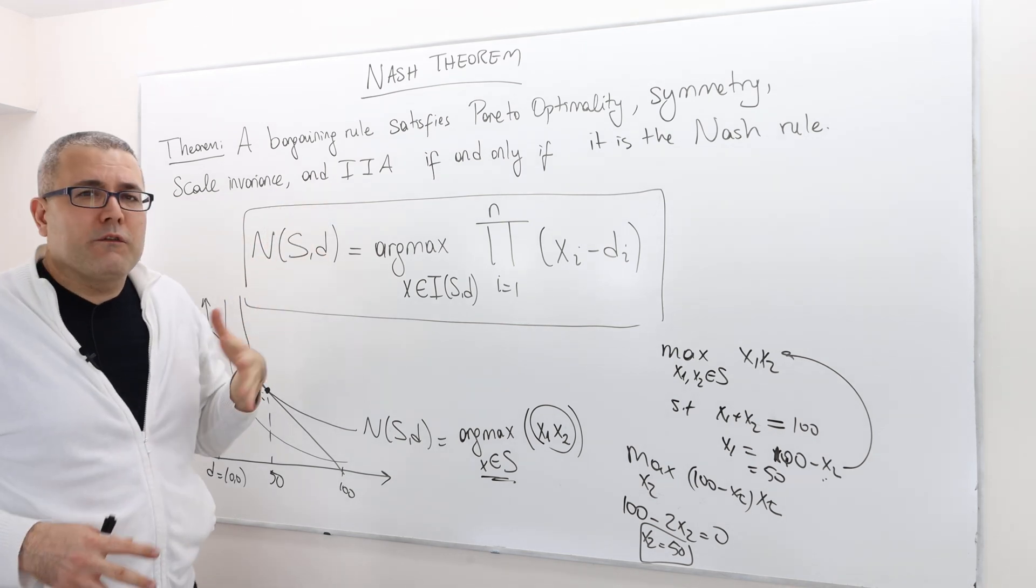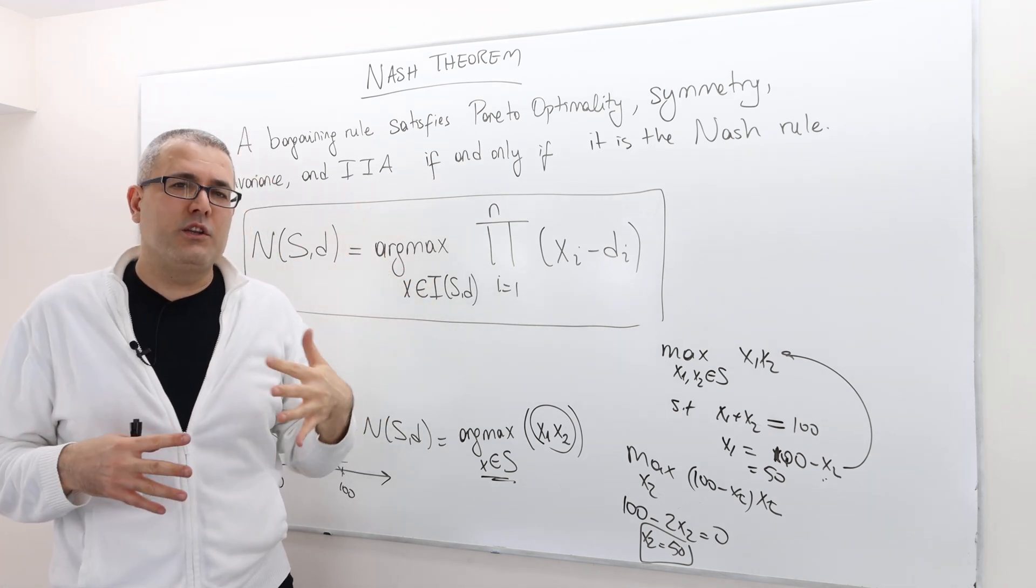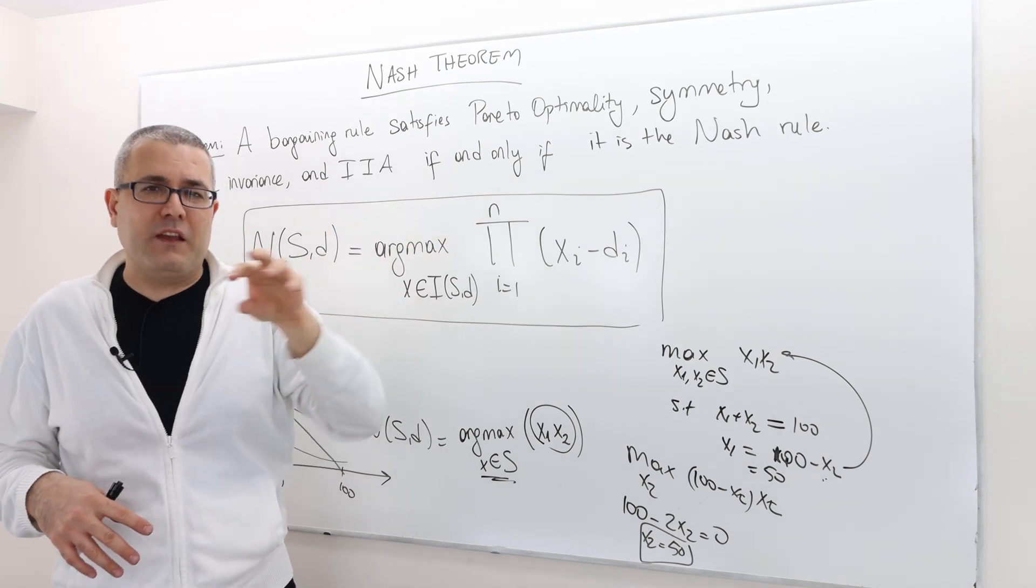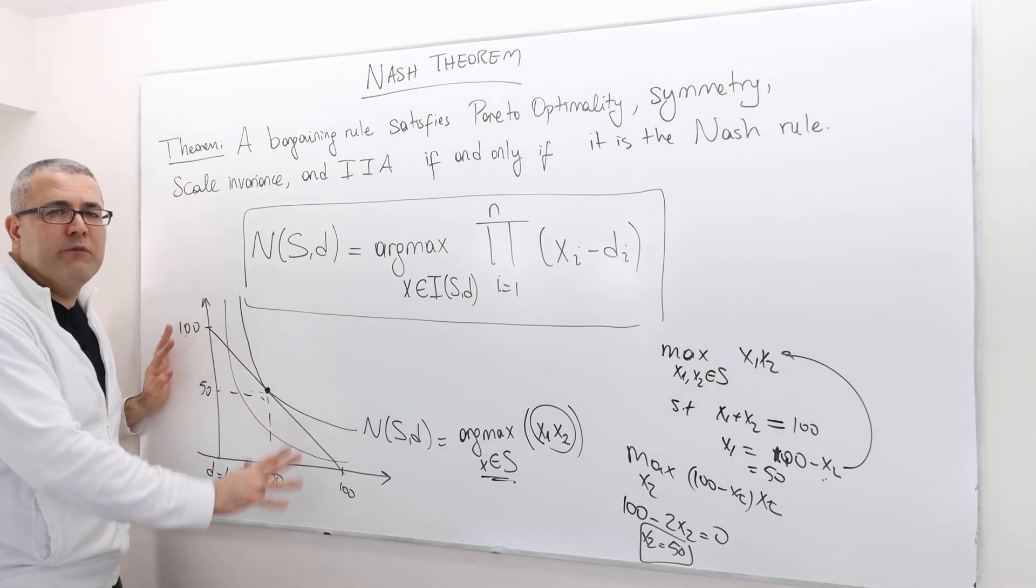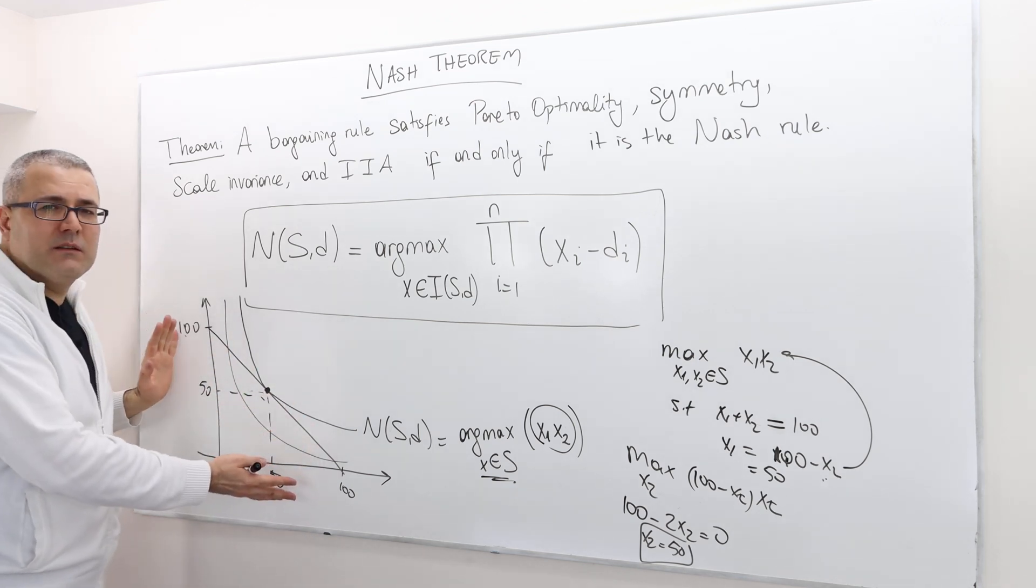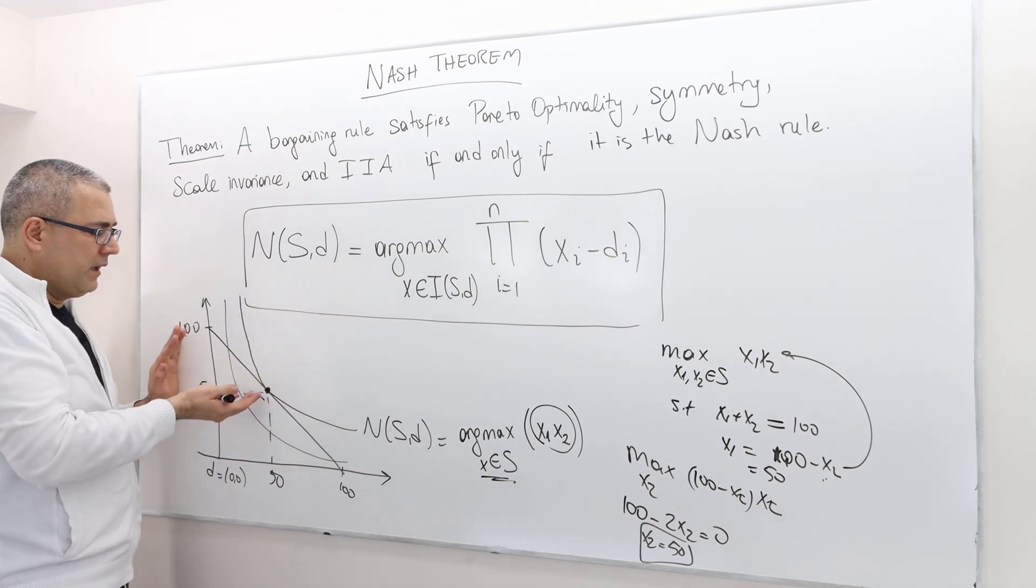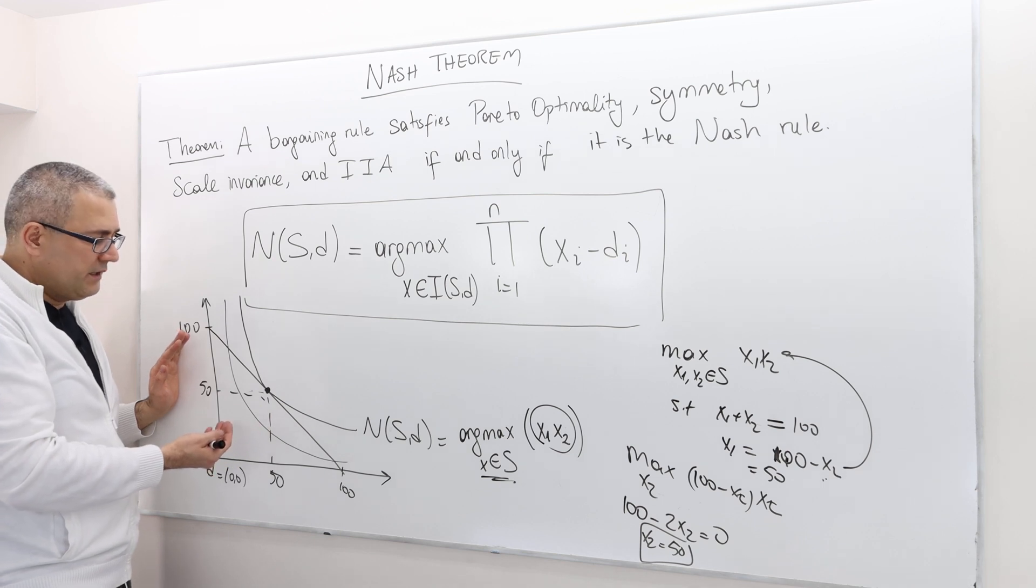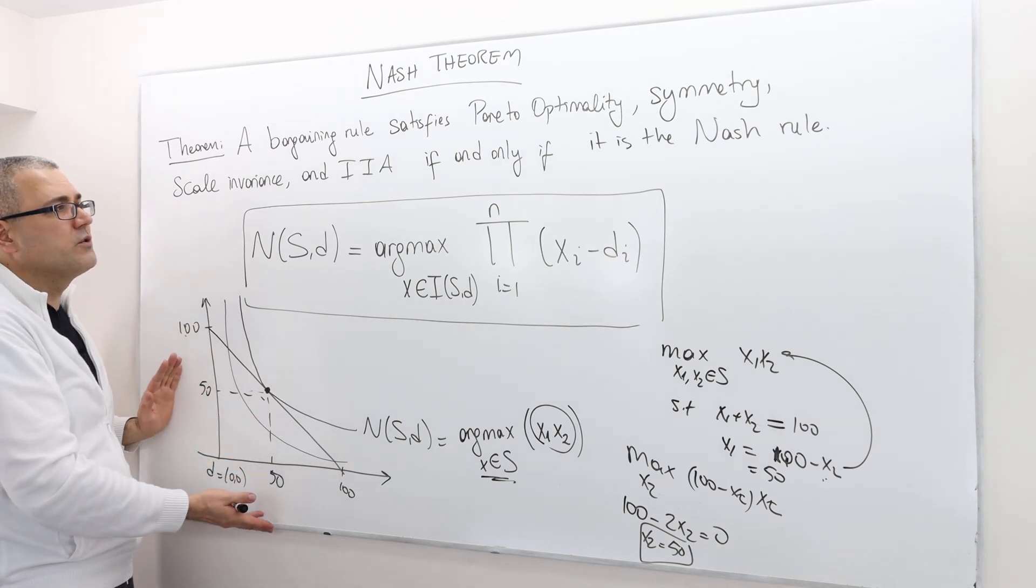Well, showing formally that a rule satisfied those properties is harder than showing a rule satisfied those properties for a specific bargaining problem. I think it's kind of obvious that, given that the bargaining problem is this one, it is Pareto-optimal, right? Because it's on the boundary. It is symmetric, right? The game is symmetric, and so 50-50 division is also symmetric.